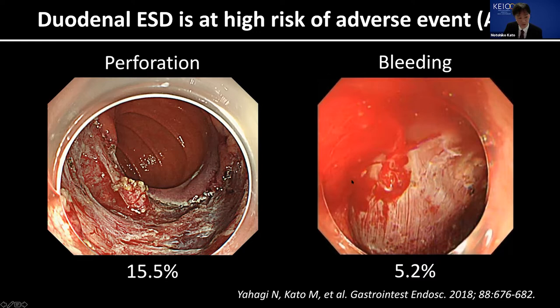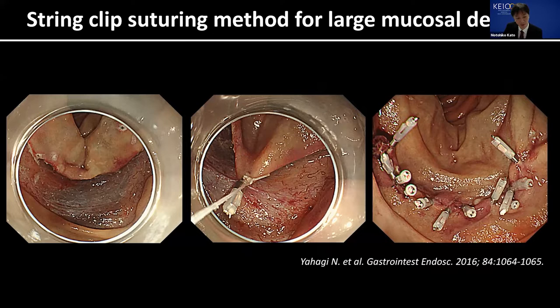It is reported that bile and pancreatic juice plays a crucial role in the development of delayed perforation. Therefore, we try to close the mucosal defect. However, a large mucosal defect is difficult to close using endoclips alone, so prophylactic closure is important to avoid adverse events even for larger mucosal defects after duodenal ESD.